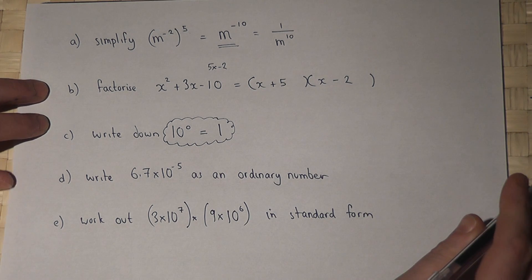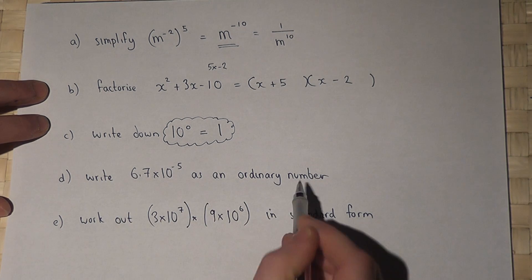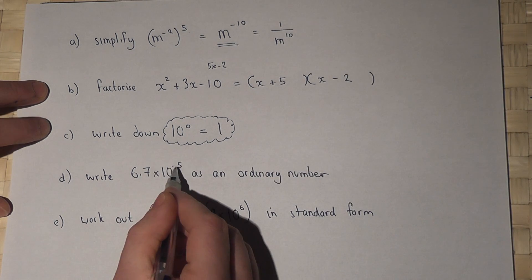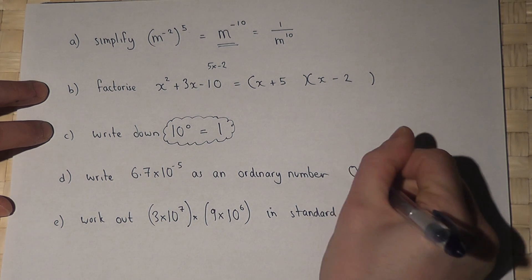Part d is asking us to write down a number given in standard form as a normal number. When you've got a negative power, in this case negative five, there's a very simple trick: you just write down five zeros, including the first zero.